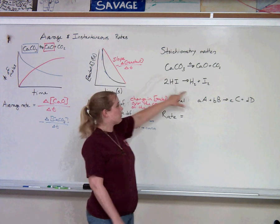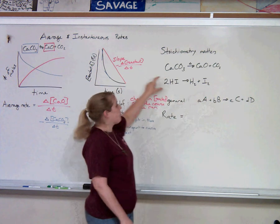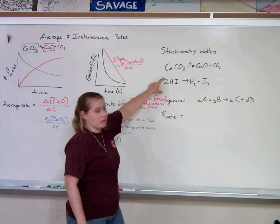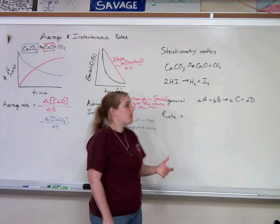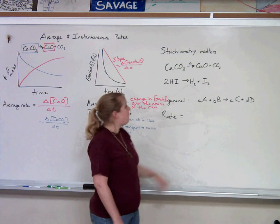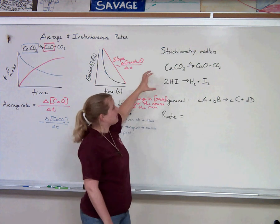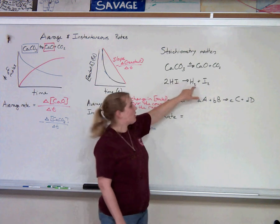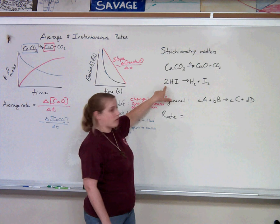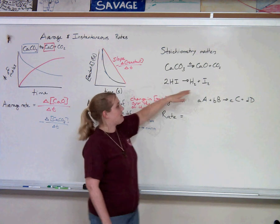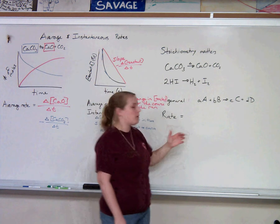If we did this reaction of hydroiodic acid decomposing into hydrogen and iodine, then for every two molecules of hydroiodic acid, we get one molecule each of hydrogen and iodine. Meaning, this is a two-to-one-to-one reaction. Meaning, the rate is not the same for reactants and products. It takes twice as long for the reactants to disappear as it takes for the products to appear. Let me show that to you mathematically.